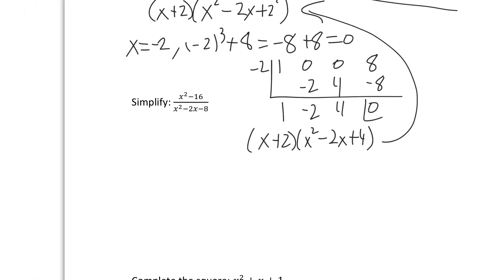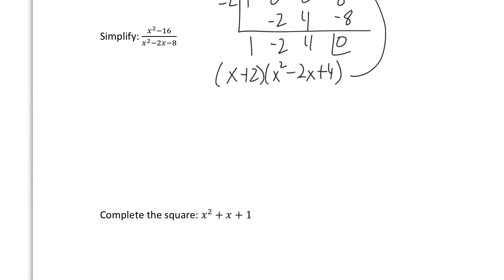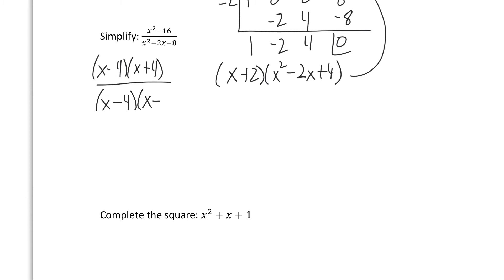Let's simplify x squared minus 16 over x squared minus 2x minus 8. Whenever you have a polynomial over a polynomial, you want to factor. The numerator factors as x minus 4 times x plus 4. For the denominator, two numbers that multiply to negative 8 and add to negative 2 are negative 4 and positive 2, giving x minus 4 times x plus 2. Canceling x minus 4 leaves us with x plus 4 over x plus 2.